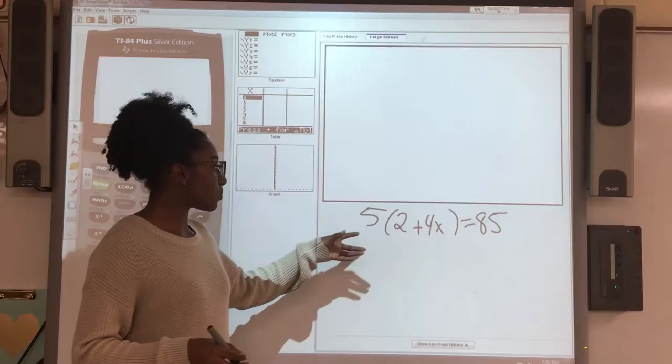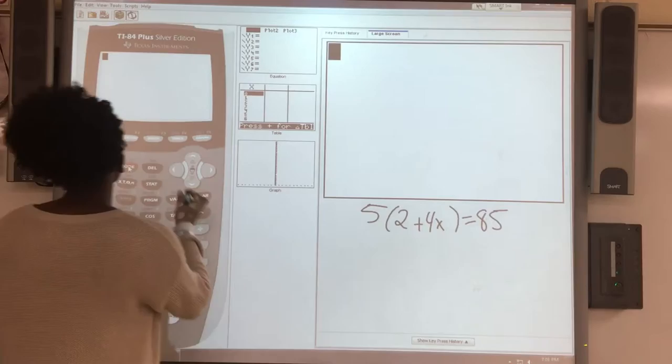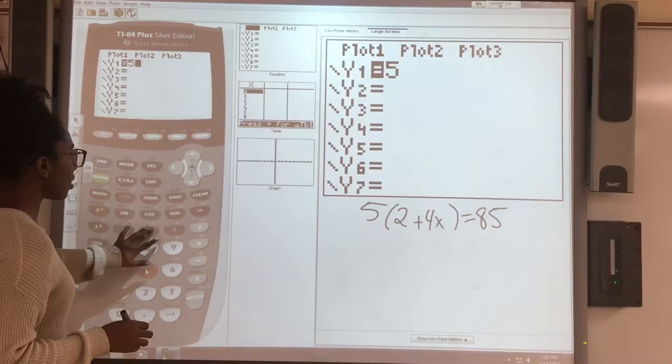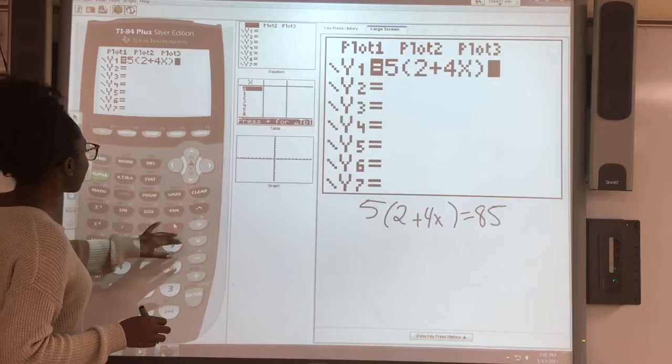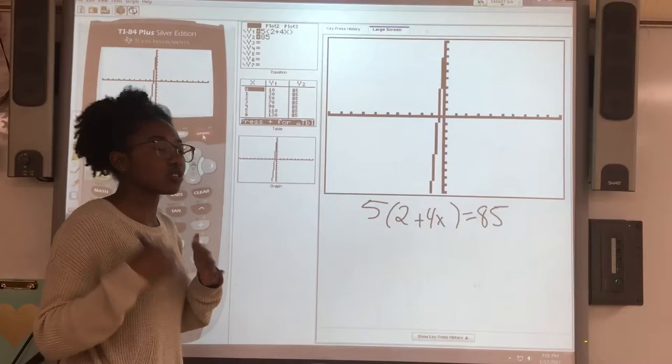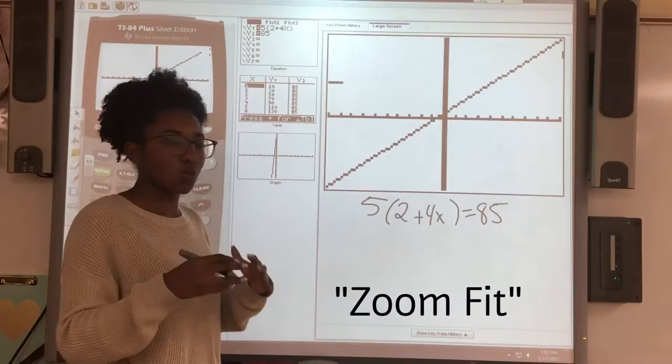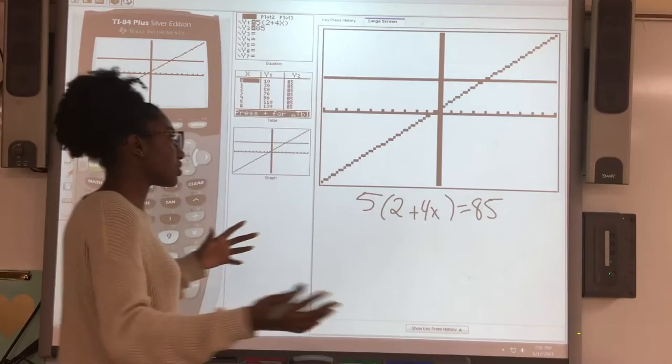The next equation we're going to do is another linear equation: 5 times 2 plus 4x equals 85. I'm not going to go through the pain of doing it by hand. I already know how to do that, so I'm just going to show you how to do it in the calculator. You go to y equals, type in your first side: 5, 2 plus 4x.